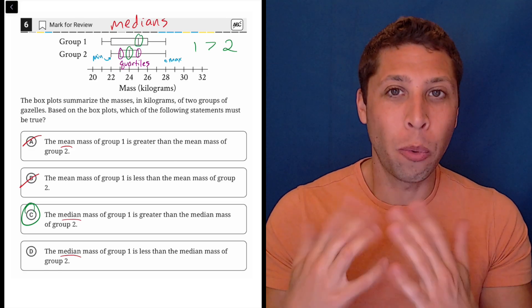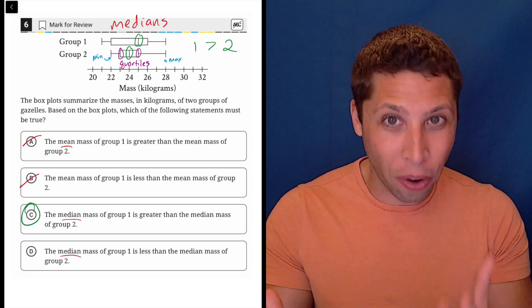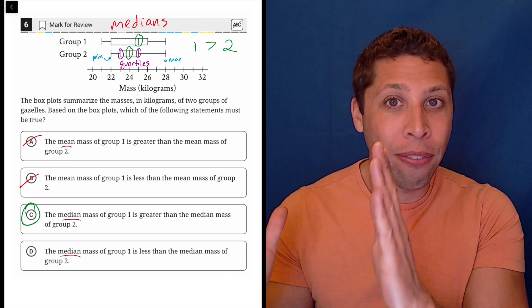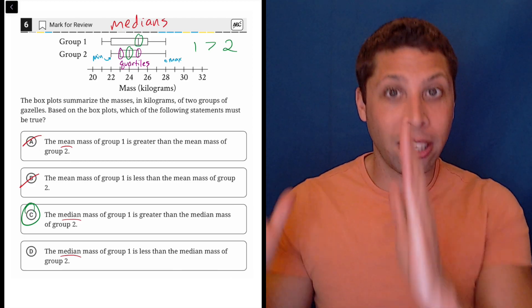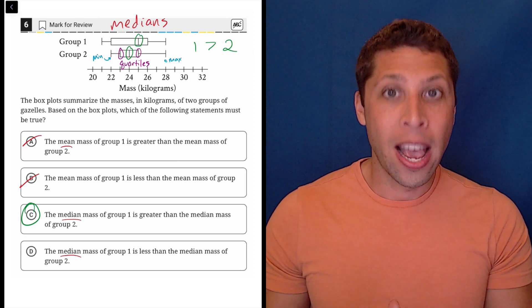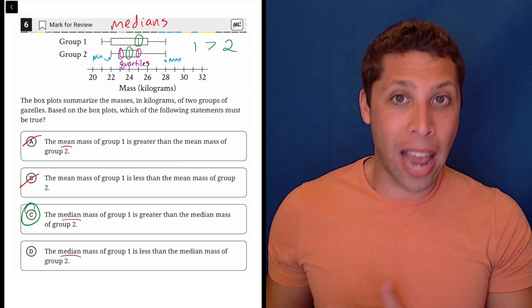A quartile - well, think of the word quartile. It's a fourth. So it's taking each half and splitting it again. The first quartile is taking the lower half of all the data and then finding the median of that half.